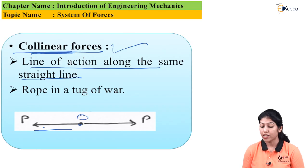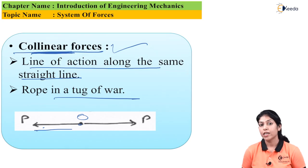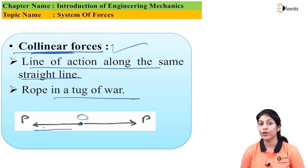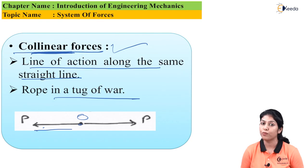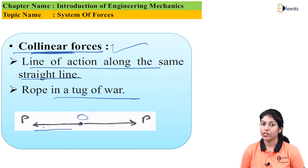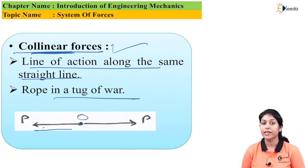The best example of collinear force is tug of war. In tug of war, there is a middle point and on one side a number of people apply forces pulling the rope in their direction. Similarly, on the second side, a number of forces are applied by people to move the rope in the other direction. So tug of war is the best example of collinear forces because number of forces are acting along the same straight line.